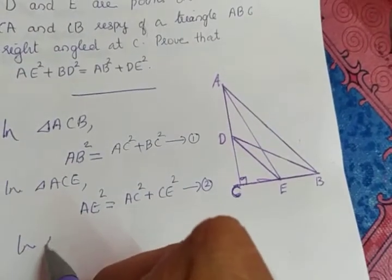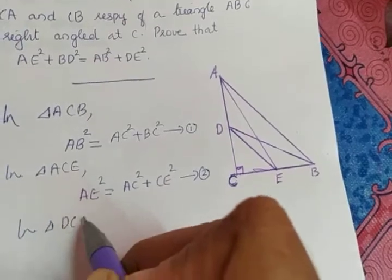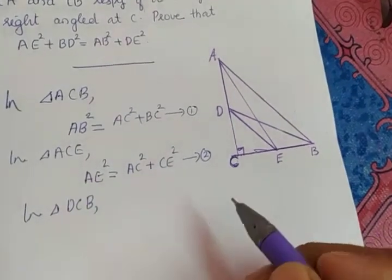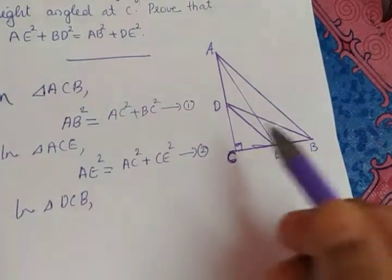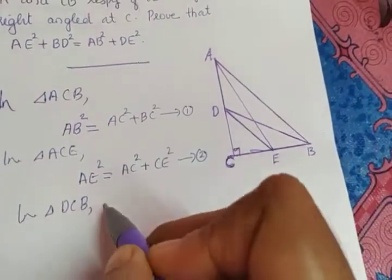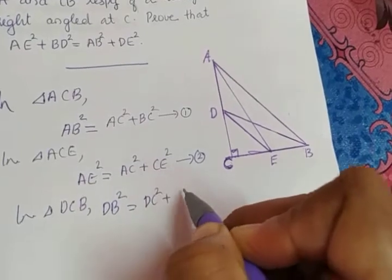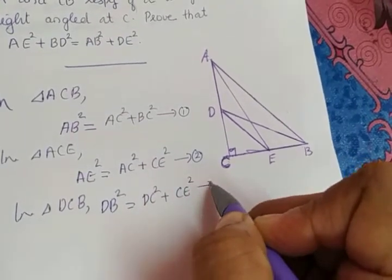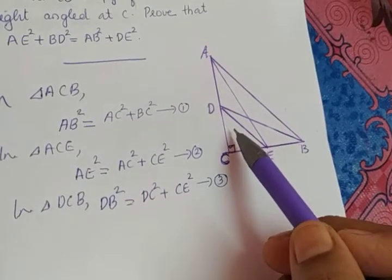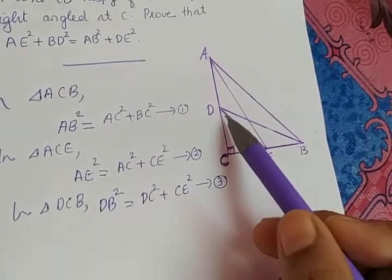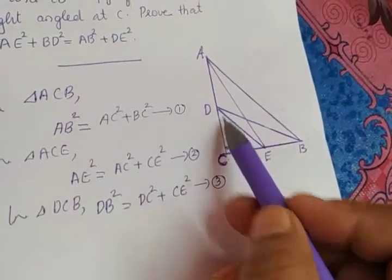The next triangle is DCB, which is also a right triangle. In right triangle DCB, applying Pythagoras theorem, the side opposite to the 90 degree angle is DB. So DB square is equal to DC square plus BC square. Let that be equation number 3.